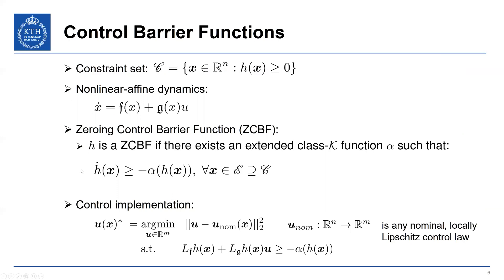So if H is a ZCBF, then we can ensure forward invariance of our constraint set by enforcing this H dot condition, which I'll refer to as a ZCBF condition. And the way this is done conventionally is by incorporating this into a quadratic program. So we define our U star in this format, where we want to minimize U with some U_NOM. U_NOM is any nominal locally Lipschitz control law. This could be a stabilizing controller, or this could be a human input to the system.